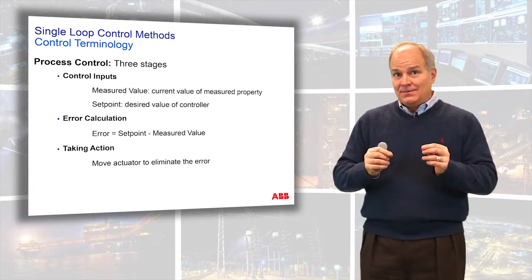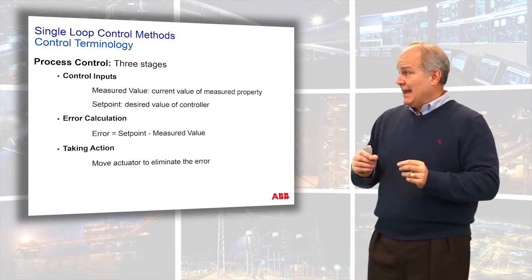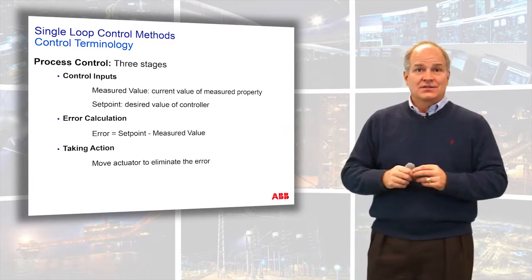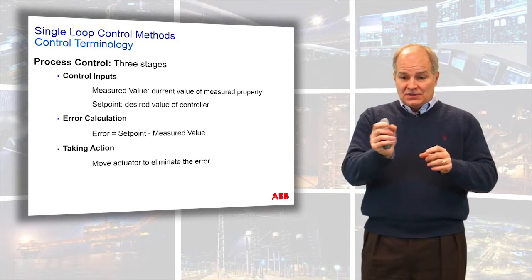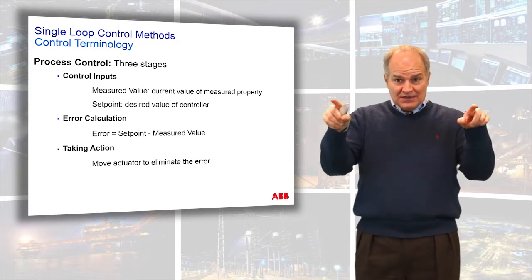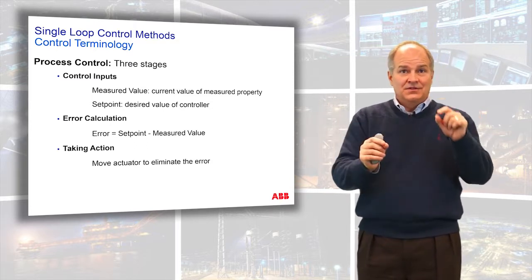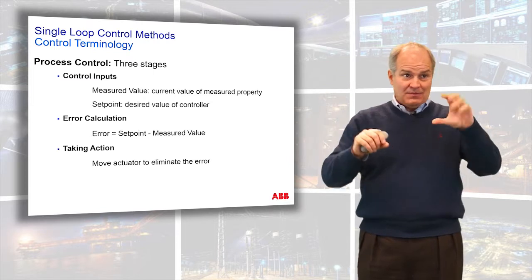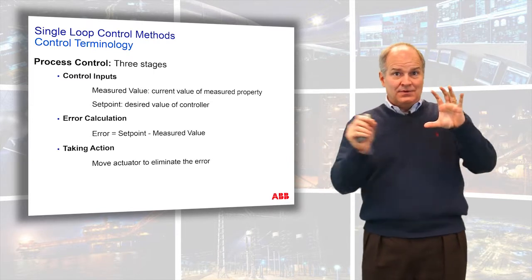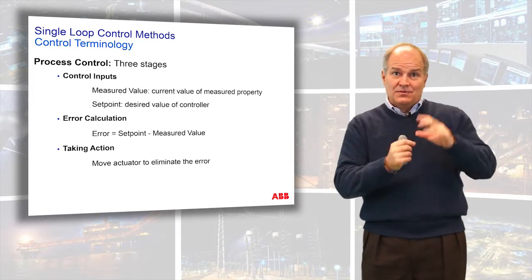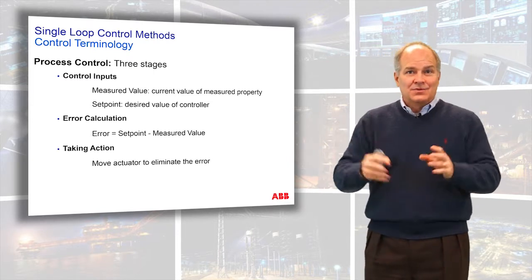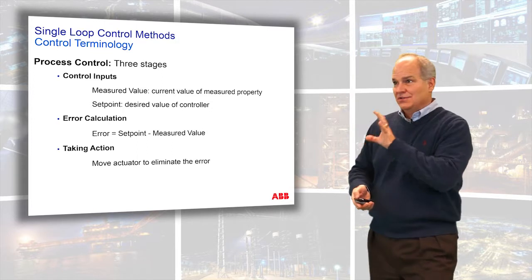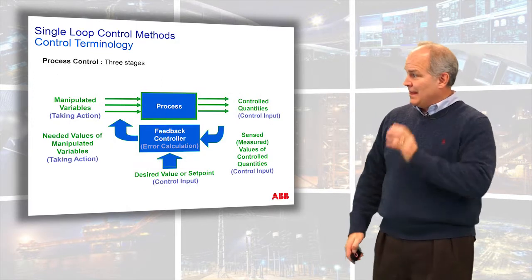Where does tuning happen? Tuning happens between the error and taking action. In terms of that teeter-totter, where is the fulcrum? If it's a little error, do I get a big output? Or if I have a big error, a little output? Where does that fulcrum fall? That's what we're introducing — the terms we're going to be using.